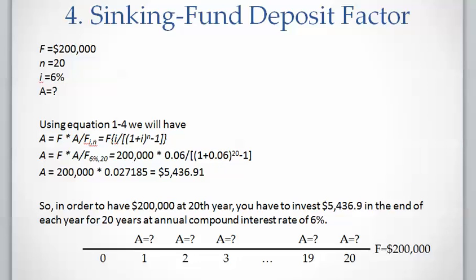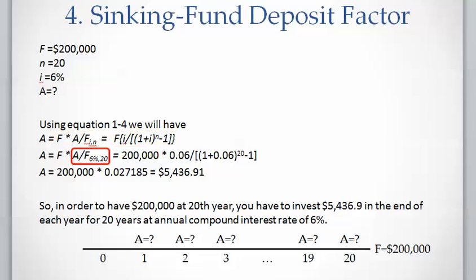So F equals two hundred thousand dollars, N equals 20 years, I equals six percent, and A needs to be calculated. We can use the factor notation to summarize the equation, where I is six percent, N is 20, F is given, and A is to be determined. Then we calculate the result.